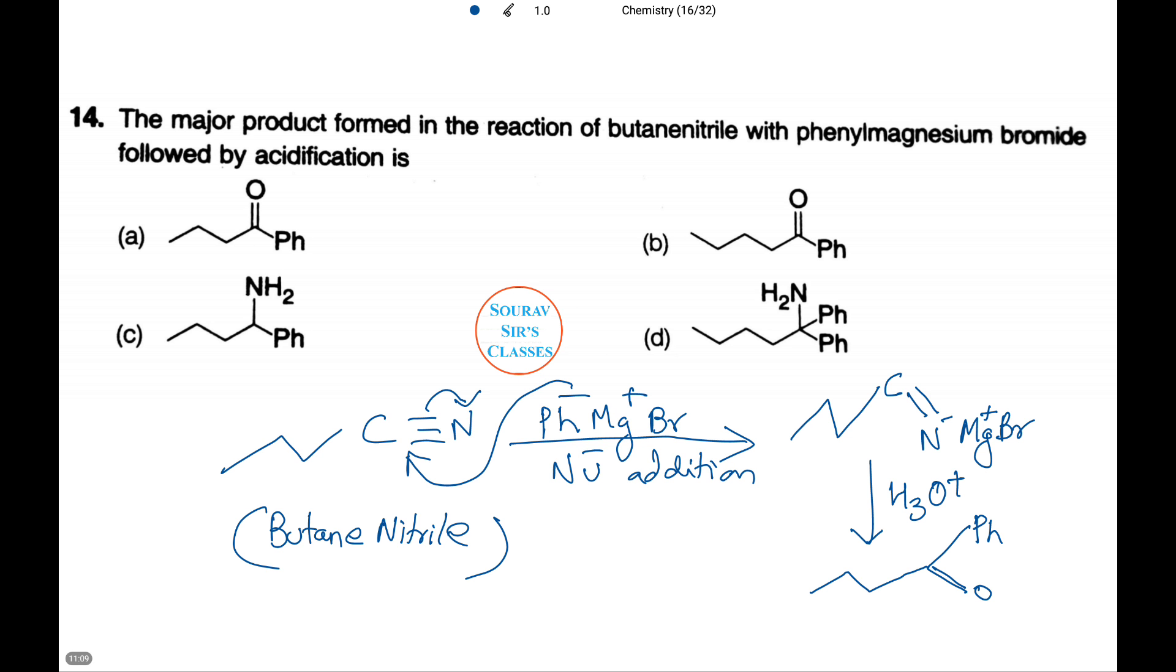This gives us a compound which has nitrogen magnesium bromide from phenyl magnesium bromide, and on further hydrolysis, this hydronium ion gives us a compound with Ph or Ph-O on either sides of the carbon chain. And this corresponds to number A.